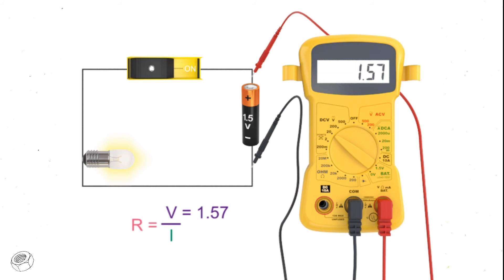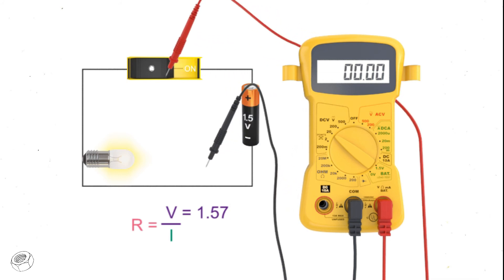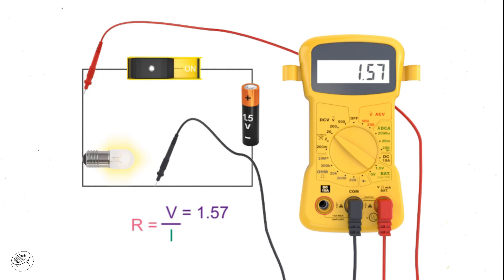Now let's measure the voltage across the light bulb. As expected, with current flowing, it too is 1.57 volts.